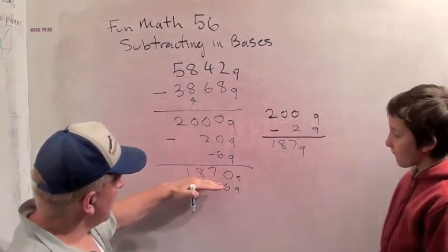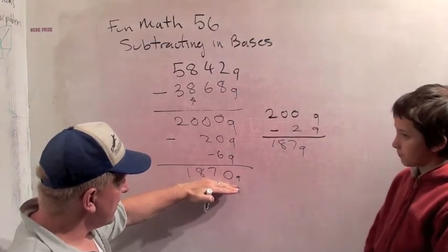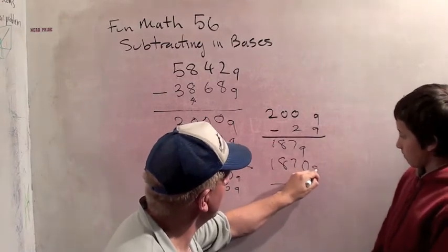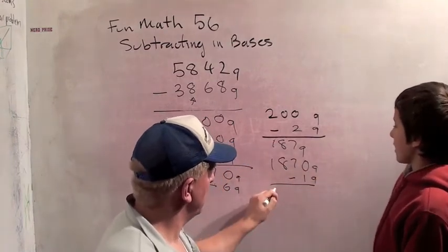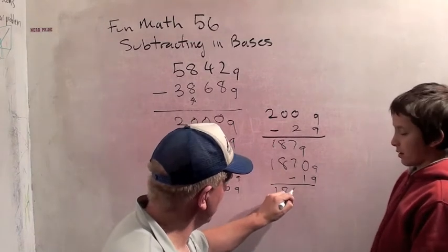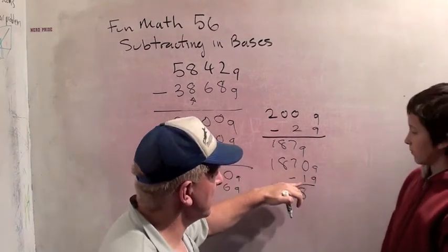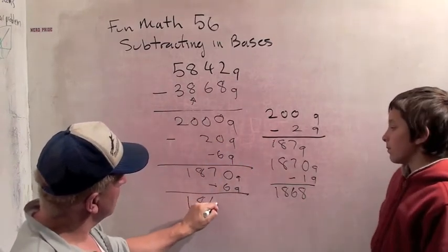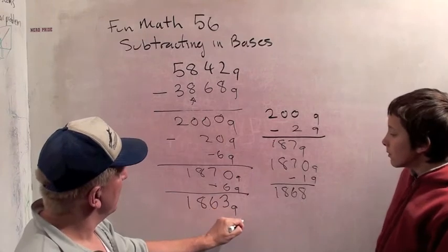Okay? Because the number that comes right before this, what's 1870 minus 1 in base 9? 1868. That's minus 1 is where you get the 8. So with minus 6 you get the 3, 1863 base 9. Okay?